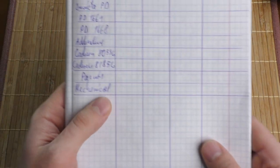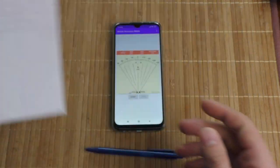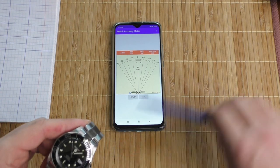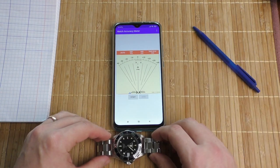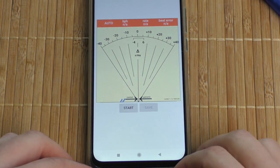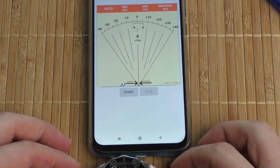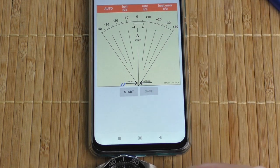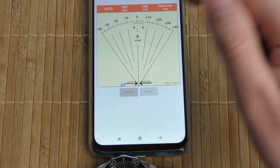So the first watch is Invicta Pro Diver. Let's take the Invicta Pro Diver and put it next to the microphone. I'll zoom in a little bit so you can see a little bit better. And as I told you, I'm not gonna wait a full minute, so let's just start.